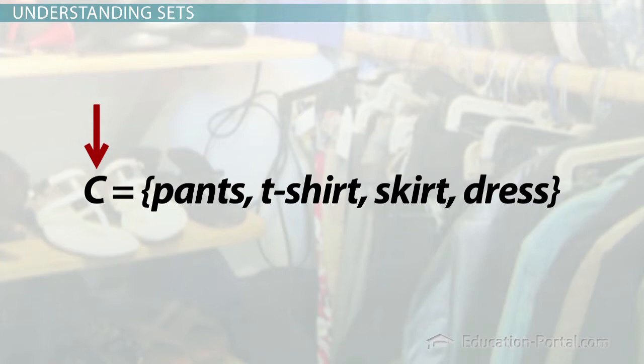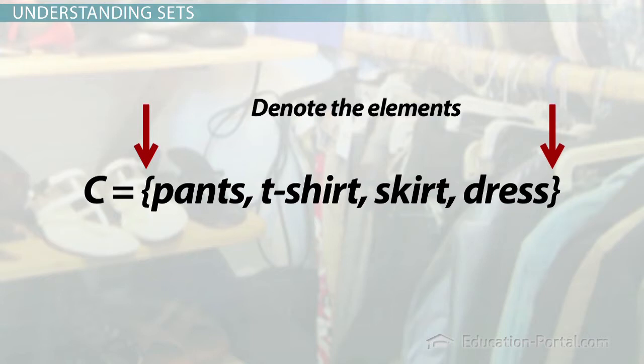The capital C represents the set. So if I said set C, we know I'm talking about clothes in my closet. The braces denote the elements, or members of the set. The elements of set C are pants, t-shirt, skirt, and dress.